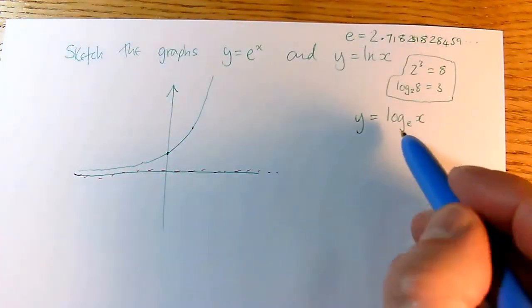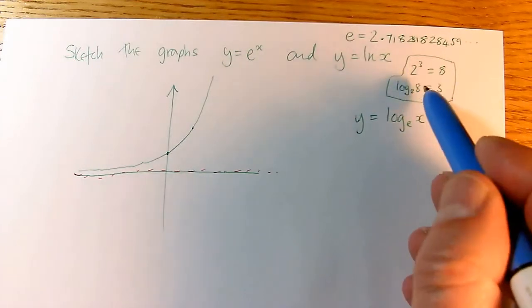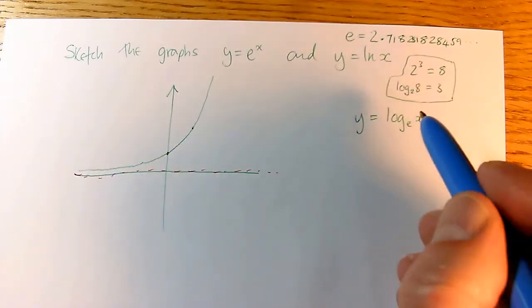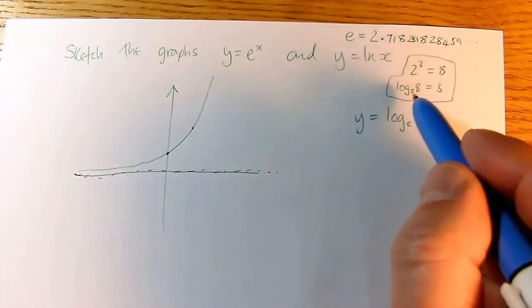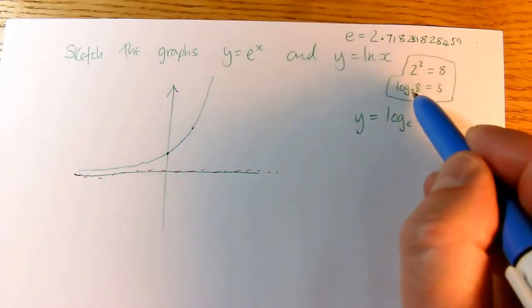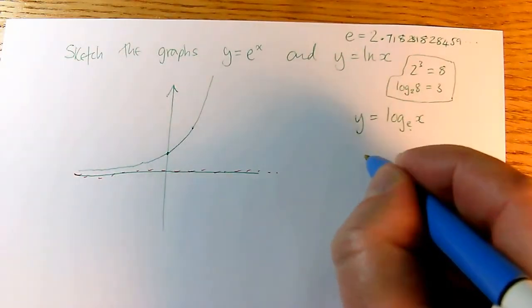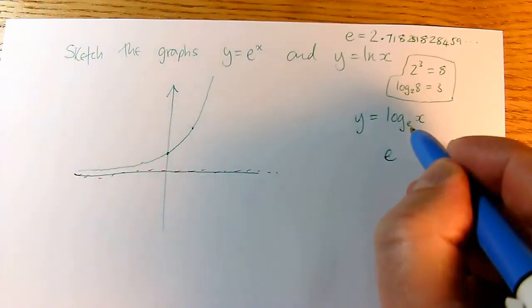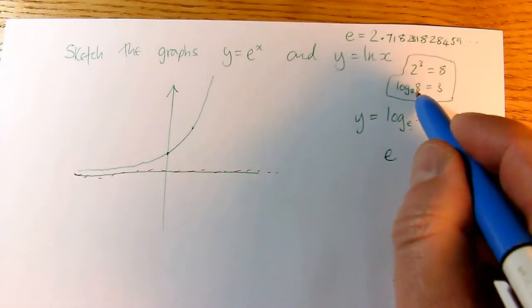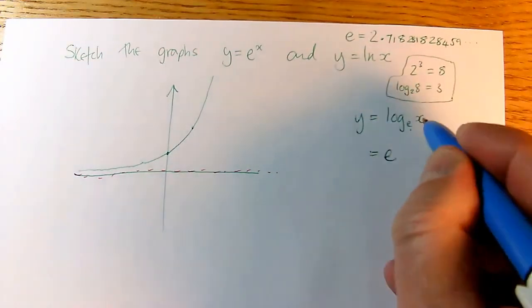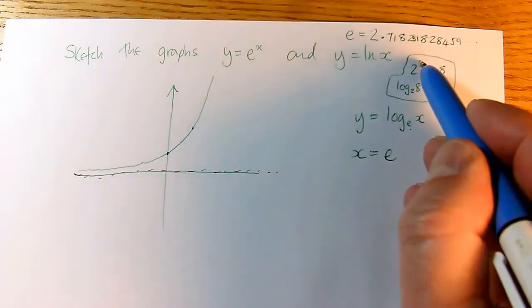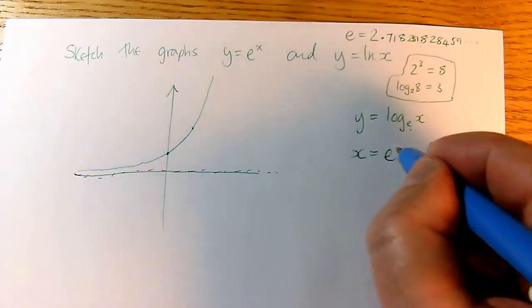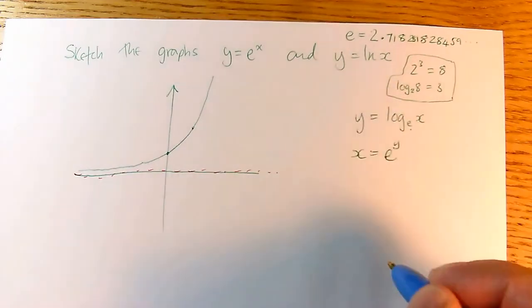So doing the similar equivalent here. So I want to turn a log statement, log to the base e of x equals y, into powers. So log to the base 2 of 8, well, the 2, the e, that's the number I'm going to be doing a power of. And then the number inside the log is the answer to the power statement, so that means x goes here. And then the number that I use as the power is the answer to the log statement, so x equals e to the power of y.